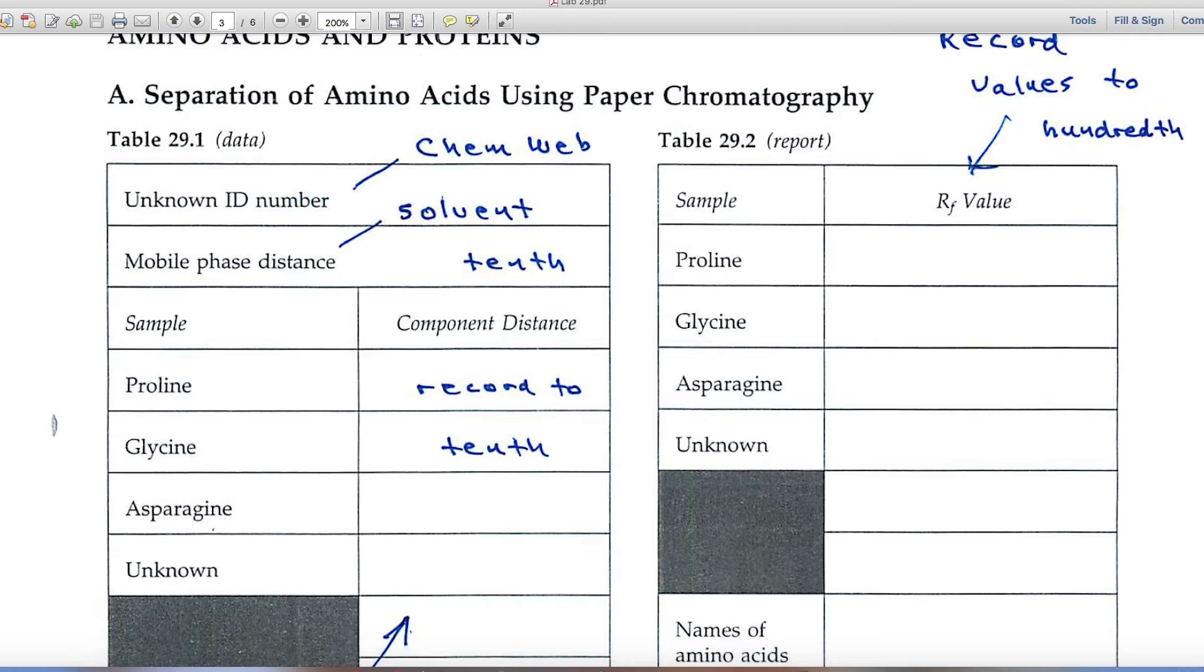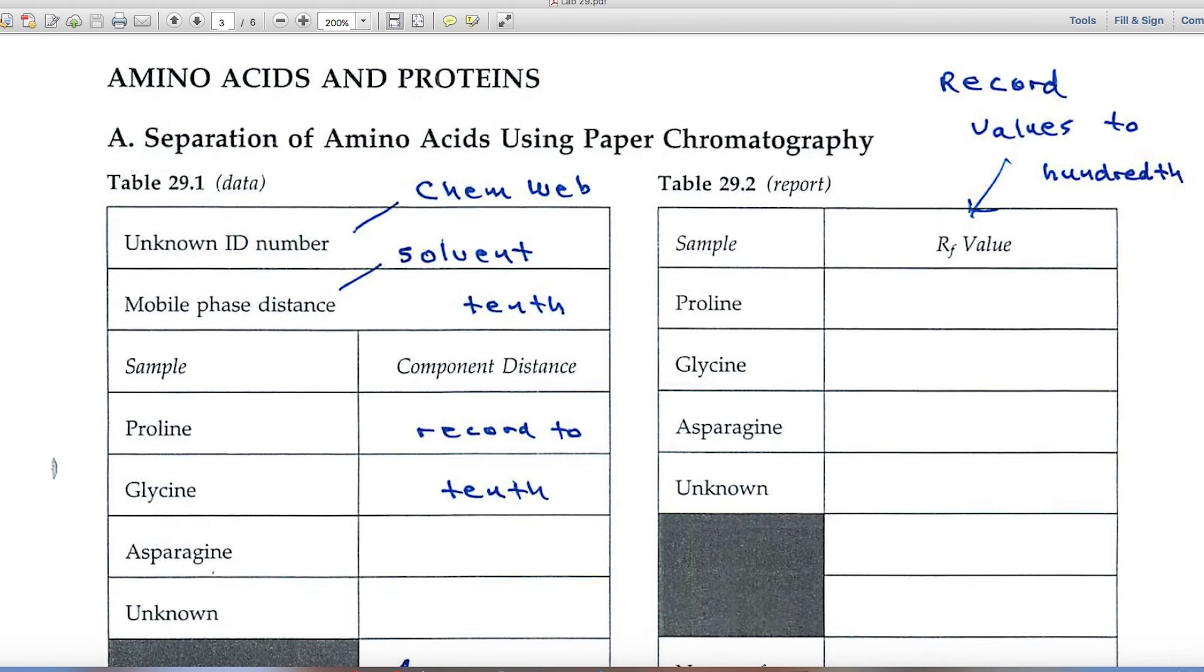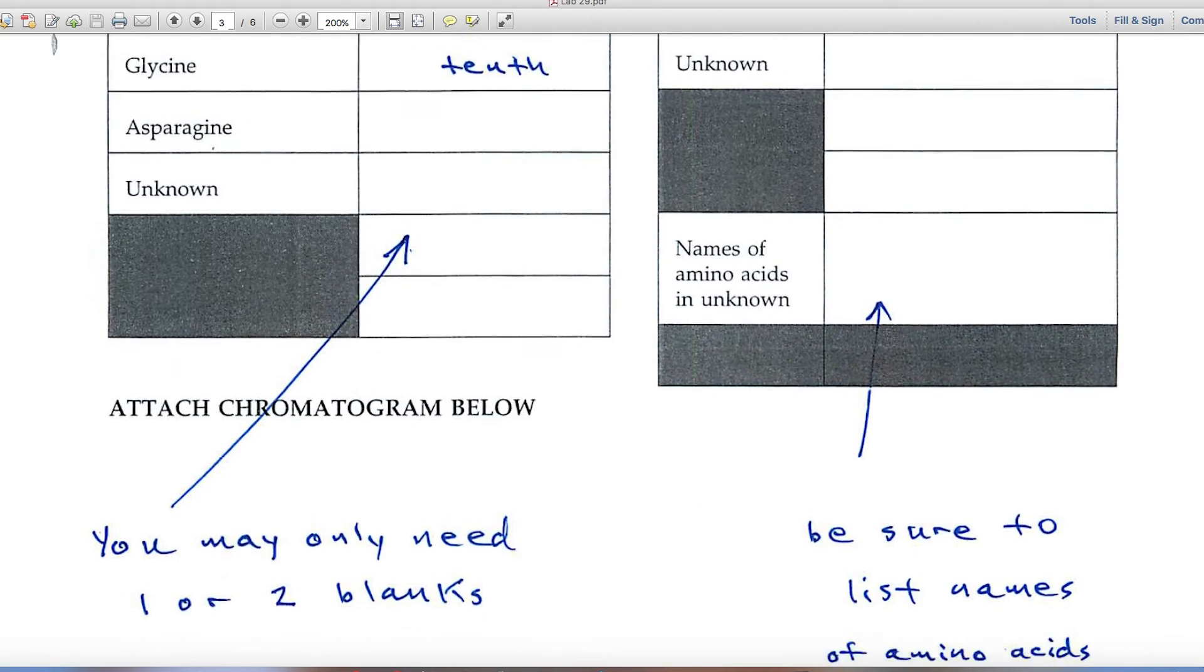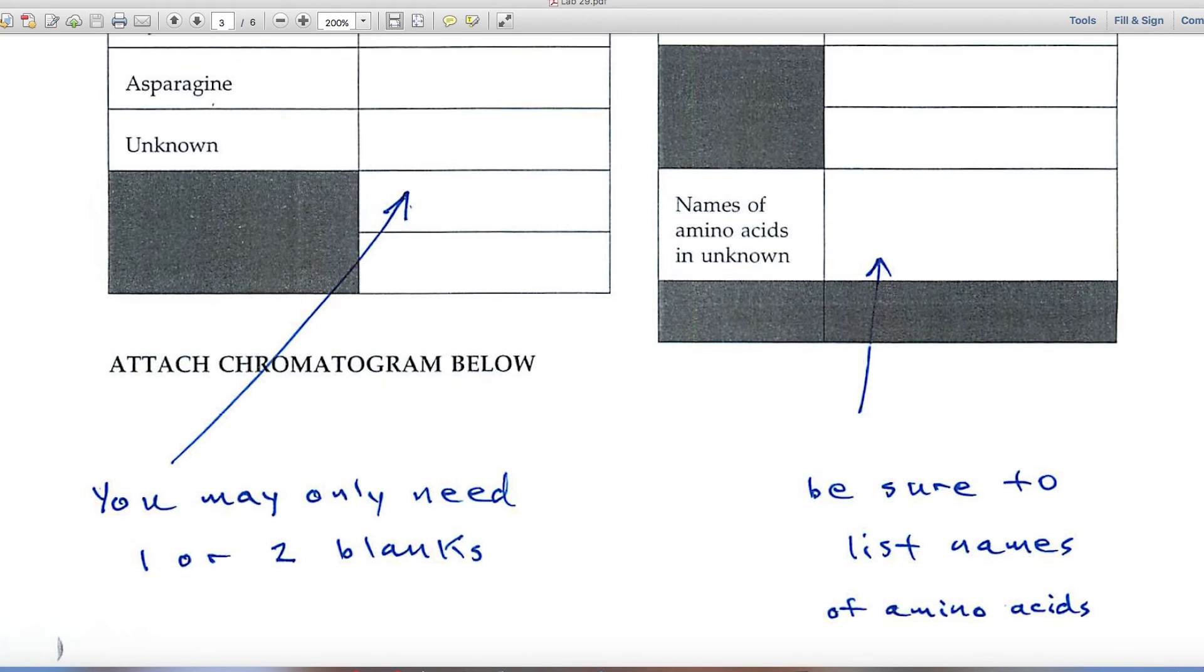Over here on the right-hand side is where you use this data in reporting. And you'll calculate the RF value. The distance that the spot has migrated over the distance the solvent migrates. And these values now can be recorded to the hundredth. So the grader will look for that. So be sure and record to the hundredth.